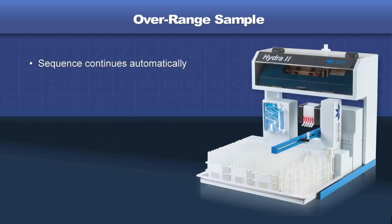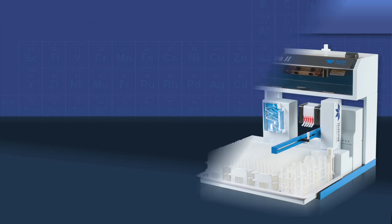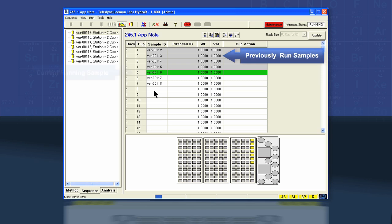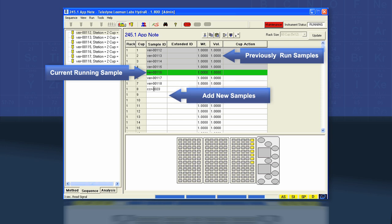More importantly, unplanned downtime is eliminated, saving both time and money. Without interrupting sample analysis, new samples can be added to the sample list. This is particularly helpful when dilution of an overrange sample is needed.